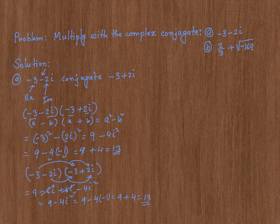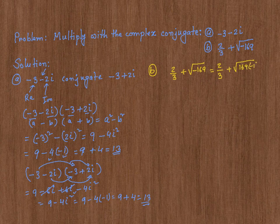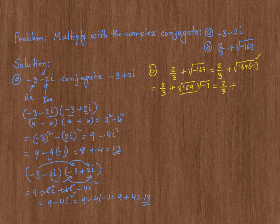Now let's do problem b. In b, I have 2 over 3 plus the square root of negative 169. I need to simplify before finding the conjugate. The square root of negative 169 equals the square root of 169 times the square root of negative 1, using the multiplication property of radicals. The square root of 169 is 13 and the square root of negative 1 is i, so this simplifies to 2 thirds plus 13i.